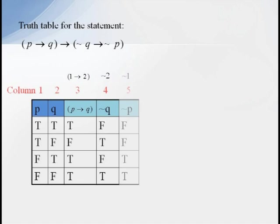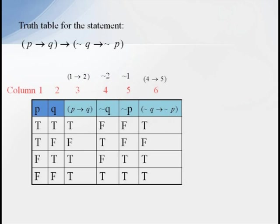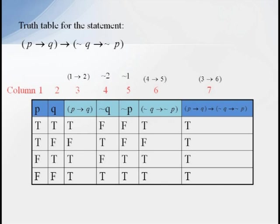and NOT P, which is the negation of column 1. And then NOT Q implies NOT P is just column 4 implies column 5. Then for our final statement, we just need P implies Q, which is in column 3, implies NOT Q implies NOT P, which is in column 6.